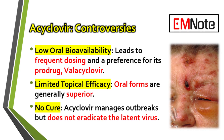In practice, a common point of discussion, or even controversy, surrounds the drug's oral bioavailability. Its low and variable absorption from the gut is a major reason for the frequent dosing regimens required to maintain therapeutic levels. This is why its prodrug, valacyclovir, was developed, offering a much higher bioavailability and allowing for more convenient twice-daily dosing. The choice between these two agents often involves a balance of cost, patient adherence, and the specific clinical scenario.